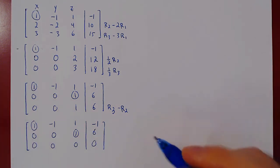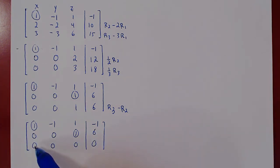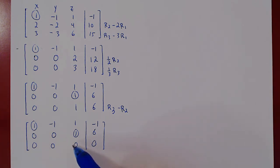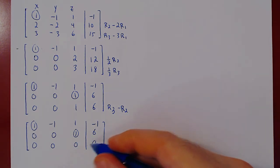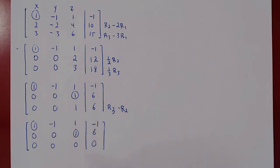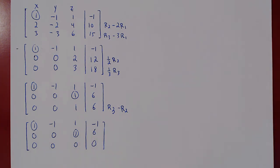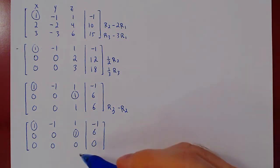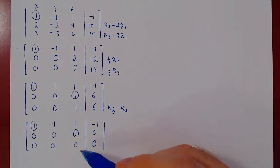A row of zeros is no problem. It says zero times x plus zero times y plus zero times z equals zero — no matter how you choose x, y, and z, this is always zero. This is simply a vacuous row; all it says is zero equals zero, which is vacuous, so there's no problem. This completes Gaussian elimination.